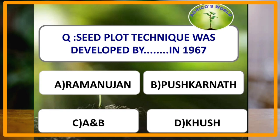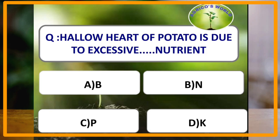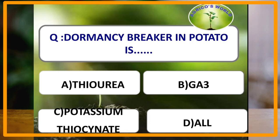Hollow heart of potato is due to excessive nitrogen, and it is characterized by irregular cavity development. Dormancy breakers in potato are thiourea, GA3, and potassium thiocyanate — all three are dormancy breakers in potato.